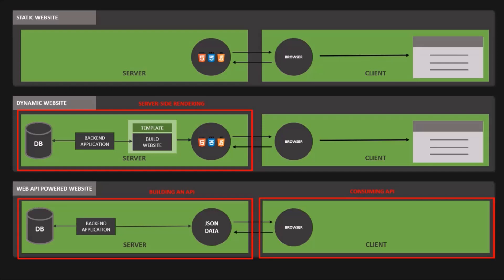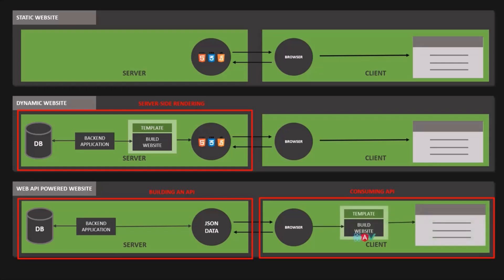In the first step, we create an API which is hosted on a server. On the client side, the website is assembled by plugging the received data into some sort of template. These templates are usually built using front-end frameworks or libraries like Angular, React, or Vue. When building an API-powered website, the building phase of the website is moved from the backend to the frontend — or from server to client. This is why dynamic websites are called server-side rendered, while API-powered websites are called client-side rendered.